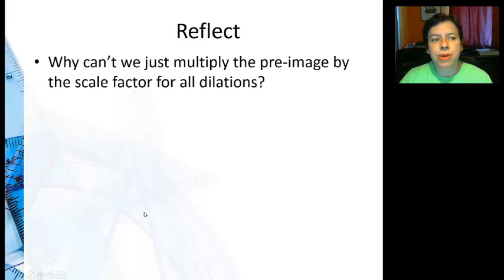So let's reflect. Why can't we just multiply the pre-image by the scale factor for all dilations? Well, the main thing when you're doing dilations about a different point is that we're measuring distances to that point, and the scale factor applies to those distances. The image will still be the same size, but where it is will change, so it won't give you the right coordinates.